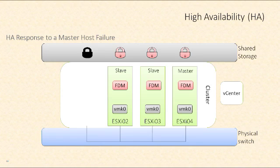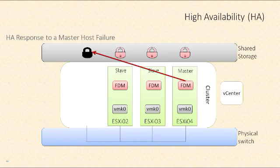Once ESXi 04 wins that election, it has a few things it needs to do. First, it needs to try to ping ESXi 01 to determine if that old master host is truly down. When the ping fails, ESXi 04 will check on the datastore heartbeat of ESXi 01. The lock file of ESXi 01 is unlocked, meaning it's not responding to management traffic and is disconnected from the storage array. So any virtual machines that were running on ESXi 01 will start to boot up on other hosts.